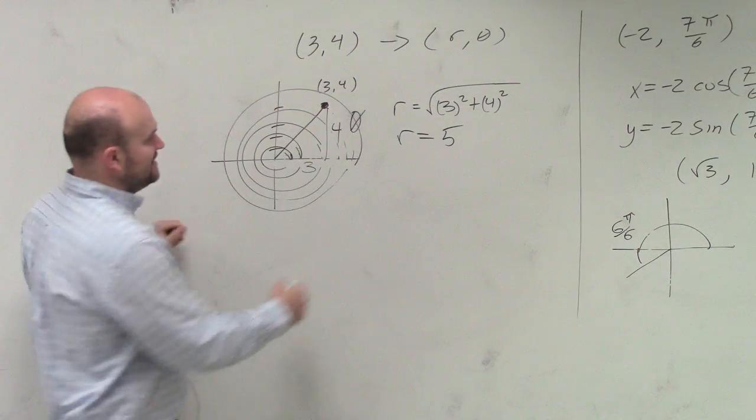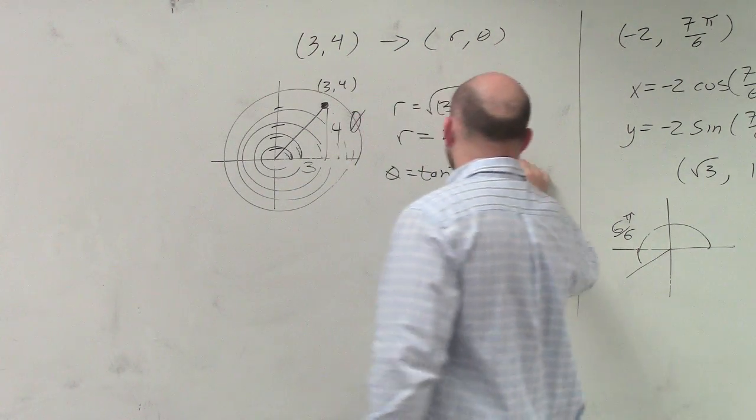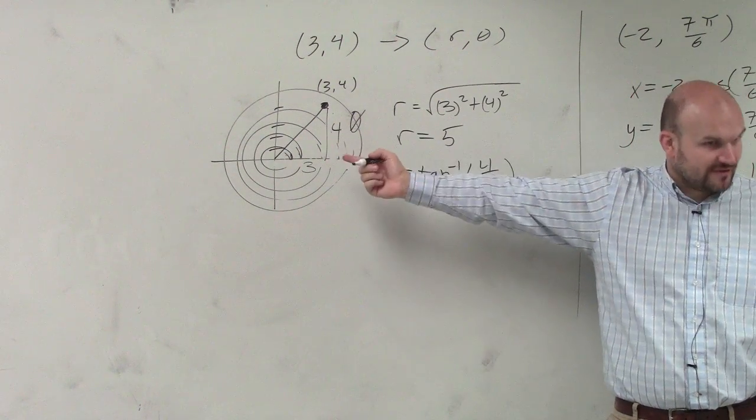And then here, to find this angle, you could say theta equals tangent inverse of 4 thirds. Because we want to use tangent, opposite over adjacent, to find the angle.